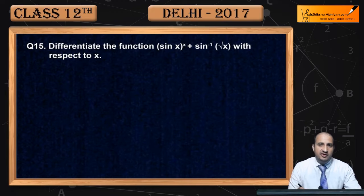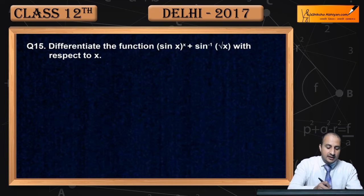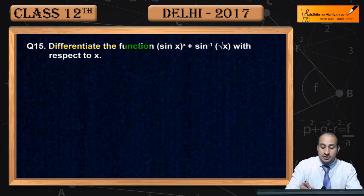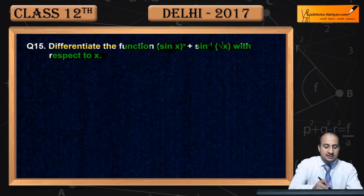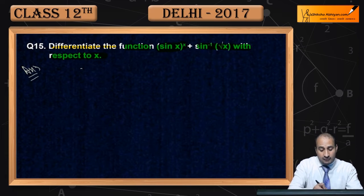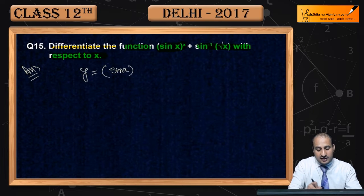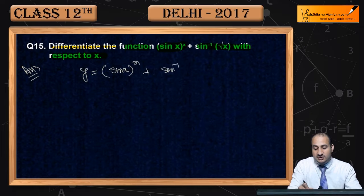Now see question 15. You have to differentiate the function sin x to the power x plus sin inverse root x with respect to x. The given function is y = sin(x)^x + sin⁻¹(√x).